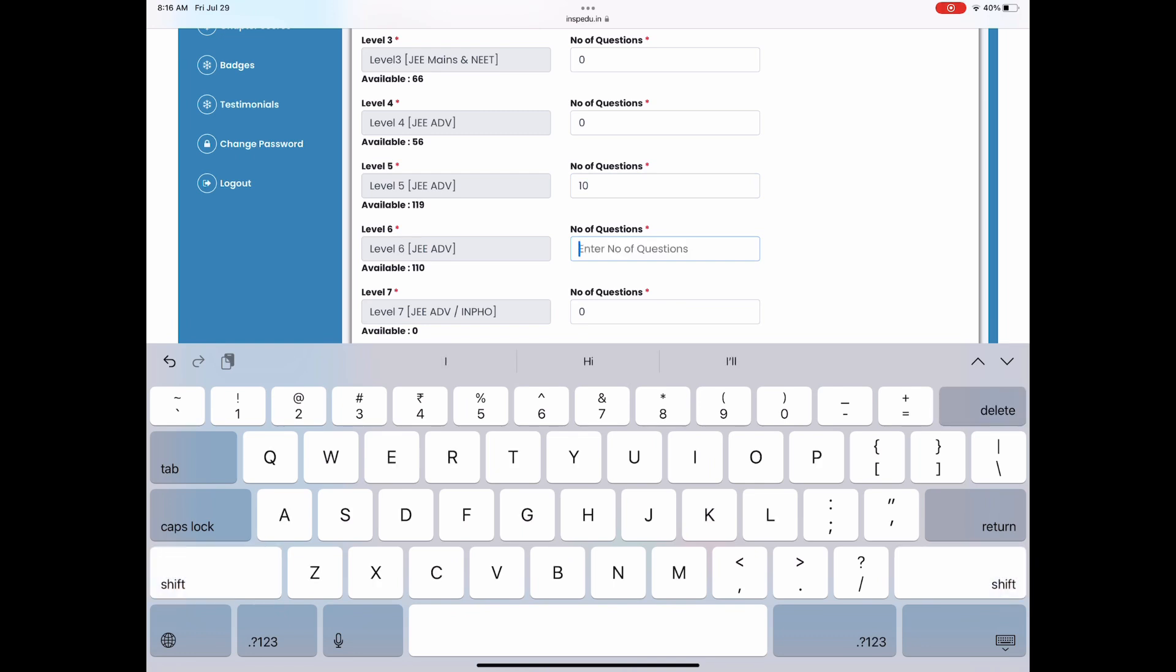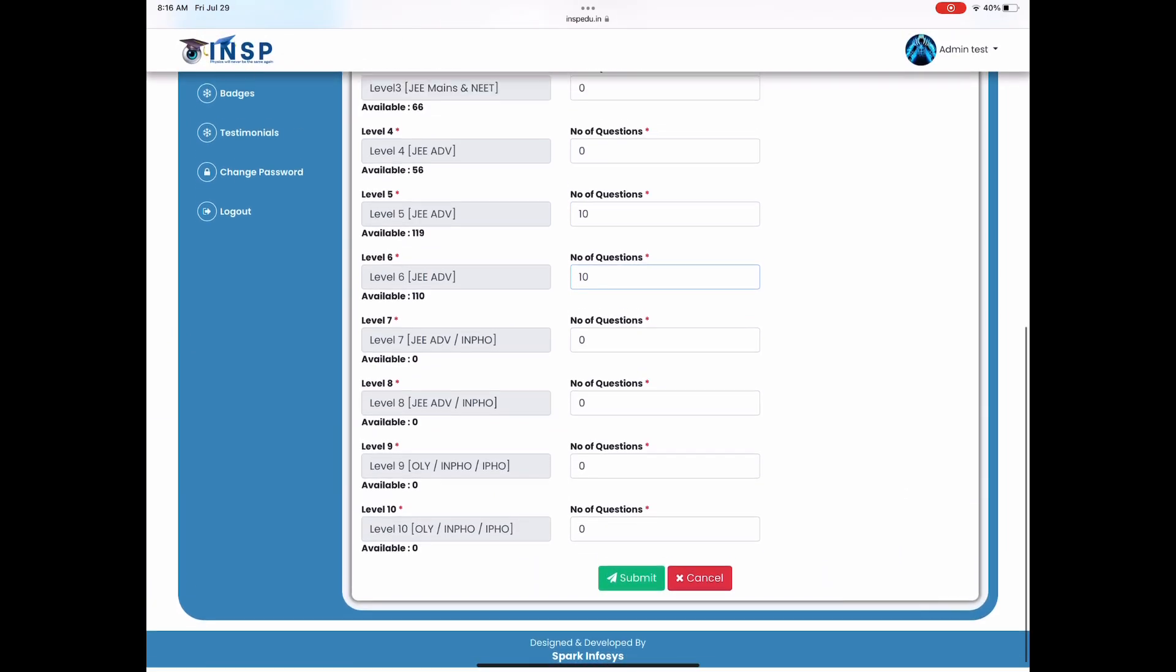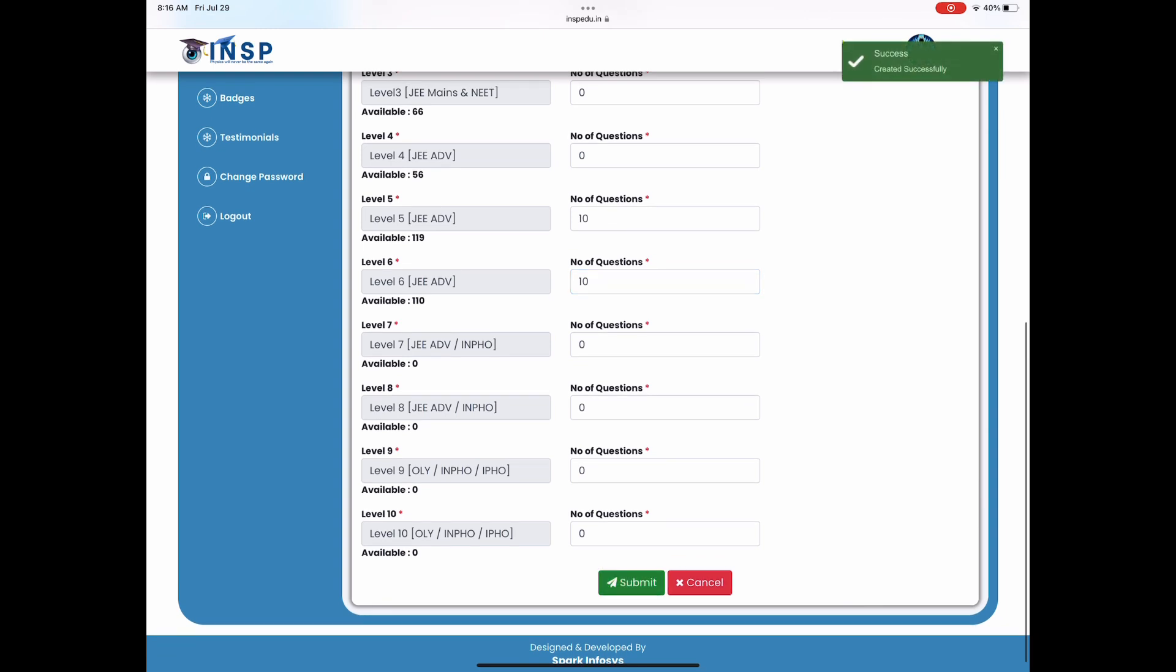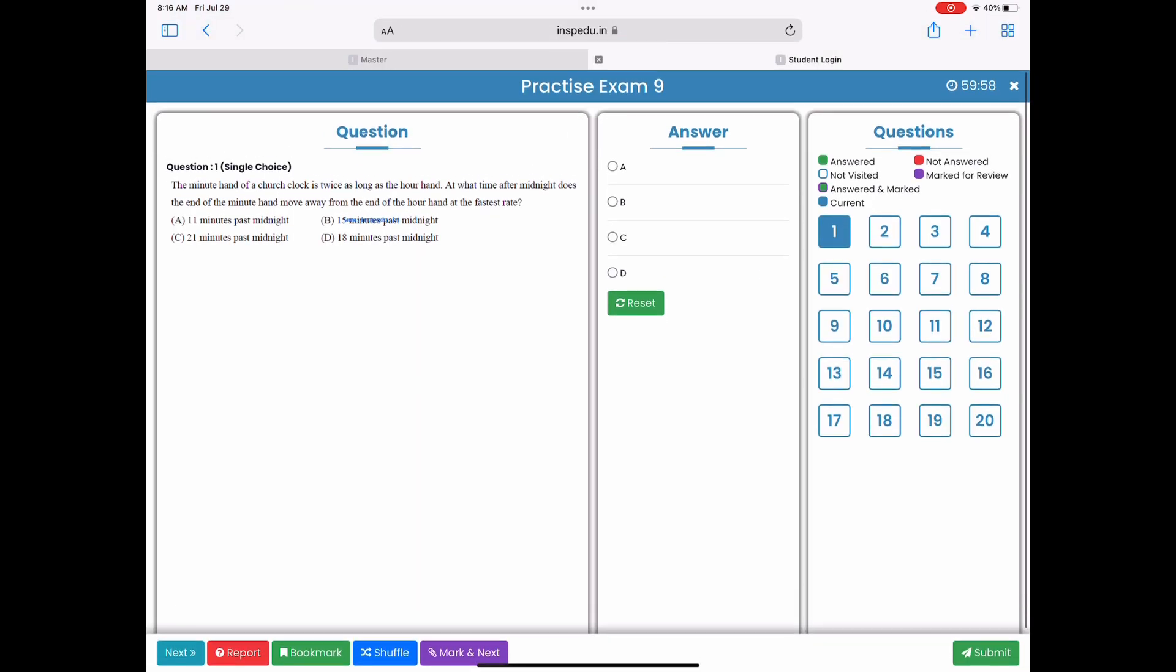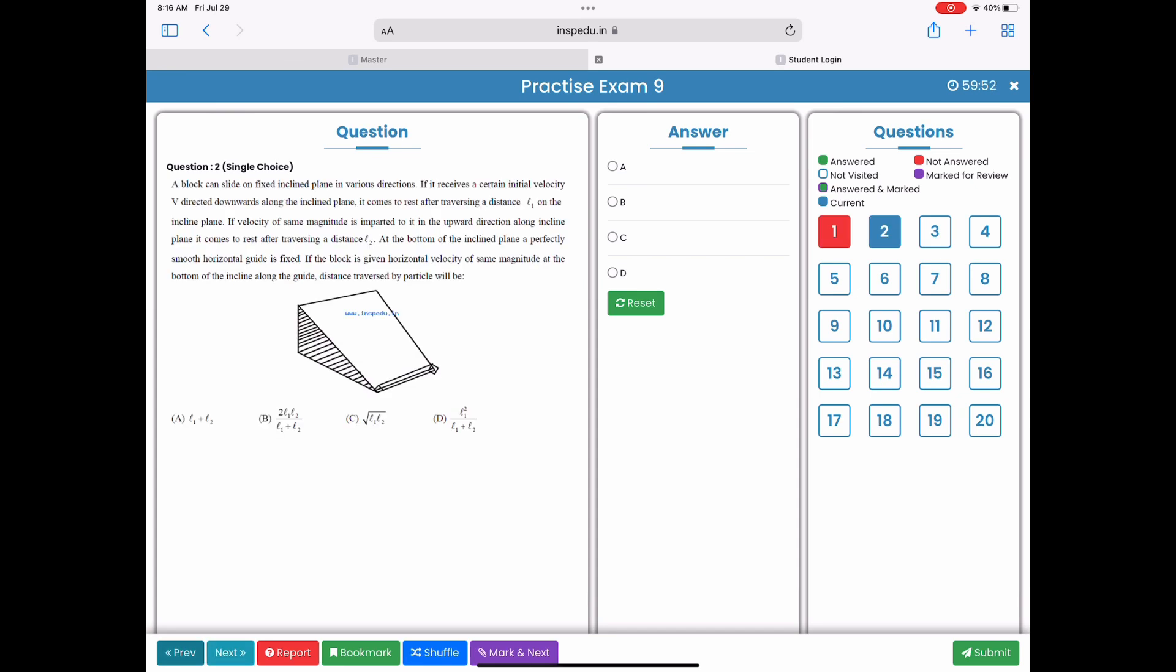10 problems from level 5, 10 problems from level 6. You can report a problem in case you find that it is not in perfect order or perfect level. You can always suggest. This is how this test window will open.